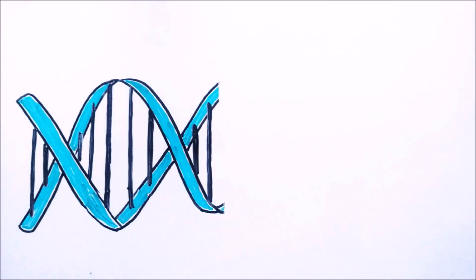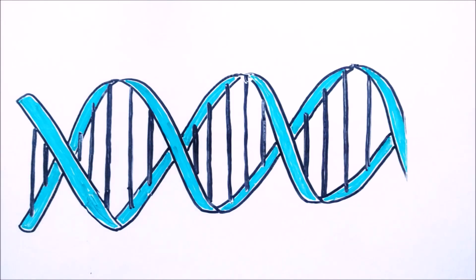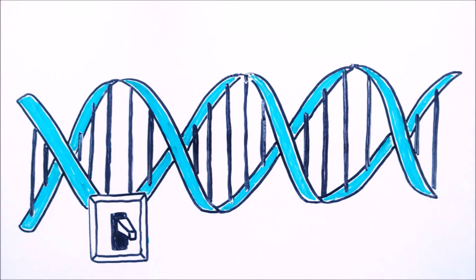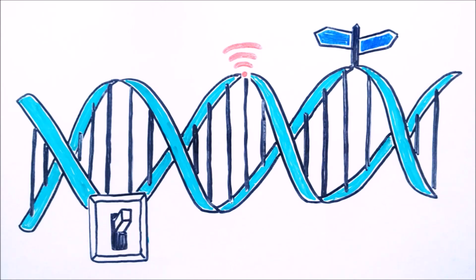The ENCODE group also discovered previously hidden switches, signals, and signposts in the DNA. These switches control the genes and amount of protein they make.